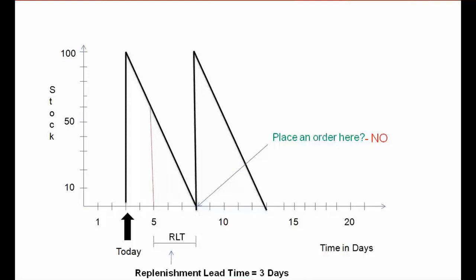We place the order three days ahead — that is the replenishment lead time. Another thing we set up is a trigger level: whenever the stock reaches 60 pieces, we should place an order. As soon as the stock reaches 60 pieces, as shown in the graph, we place an order. After three days the stock will arrive, so there will never be any shortage. That is the concept of the reorder point.